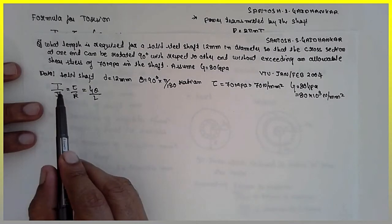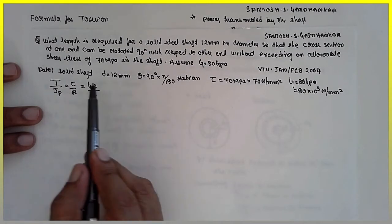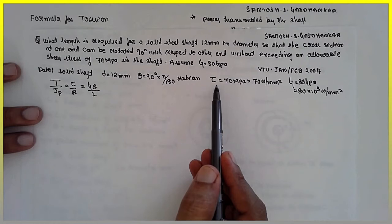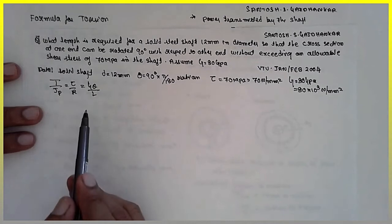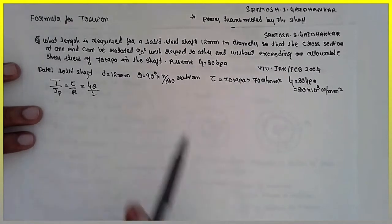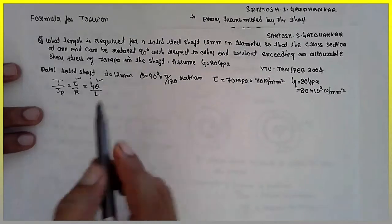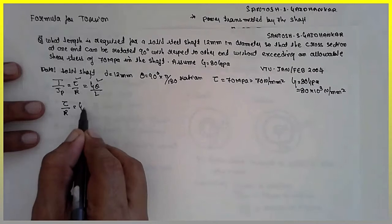Now theta is given, shear stress is given. R can be obtained, R is nothing but D by 2. That means the combination of these two is preferred. Tau divided by R is equal to G theta by L.